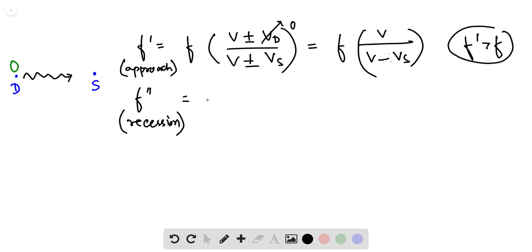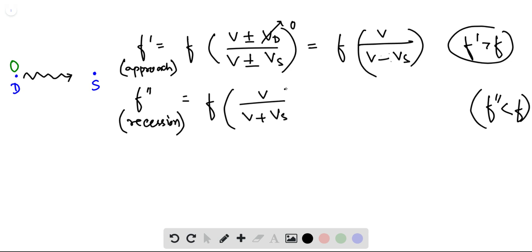And is moving towards the source. This means that F'' is less than F. Therefore we should have a positive sign here because we want F'' to be less than F, and that's only possible when the denominator is greater than the numerator.